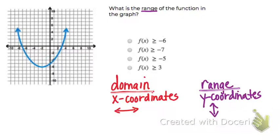We need to recall that domain is the x-coordinates. It's where the graph goes left to right, like the x-axis goes left to right.